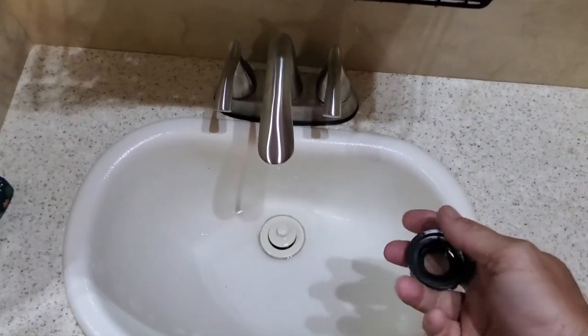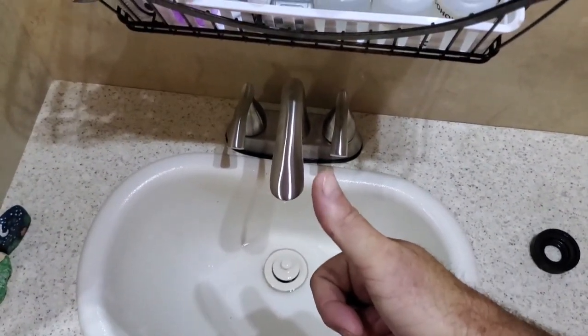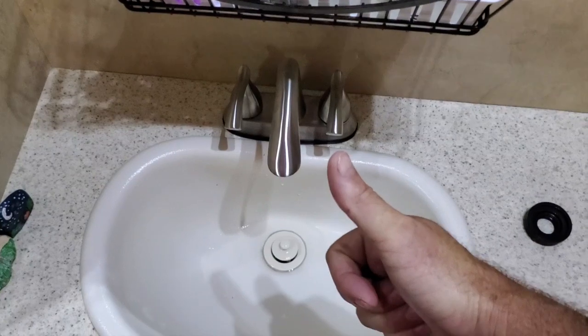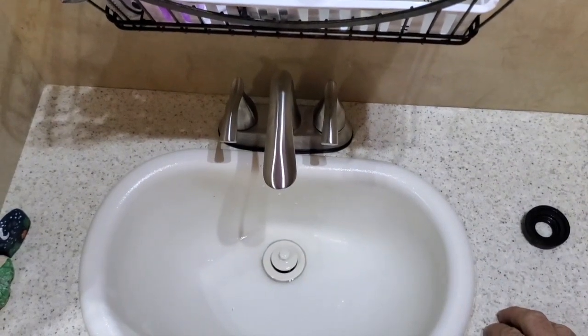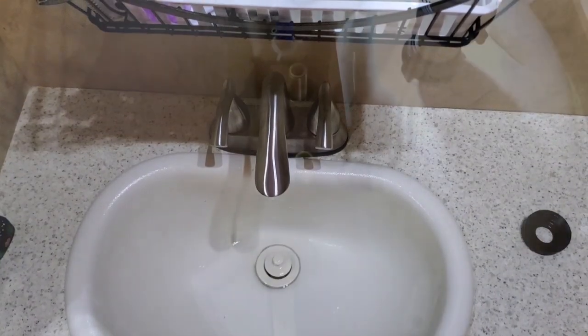We'll screw on our retainers to hold that faucet itself tight against the cabinet, and then we'll throw it on the hot and cold water lines. We'll turn it back on, check for leaks, and then we'll get the okie dokie from the wife and see what she thinks. It's looking good.